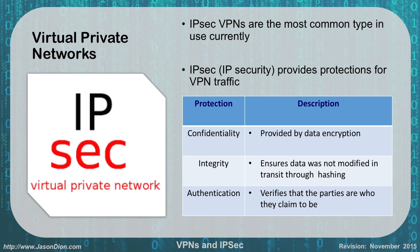With our virtual private networks we have to secure this tunnel, and the most common way we do that is with IPsec. IPsec, or IP Security, provides protections for our VPN traffic by creating an encryption tunnel. It gives us confidentiality by providing data encryption, and it provides us integrity by ensuring the data is not modified in transit by using hashing.